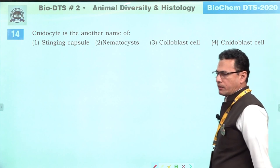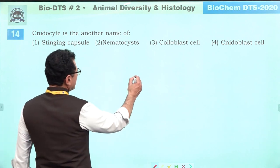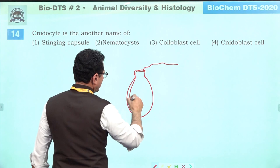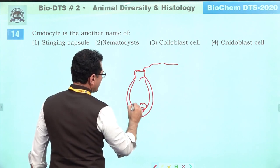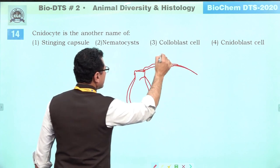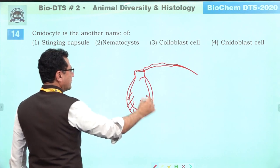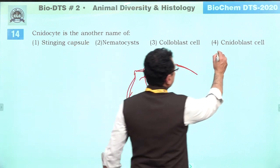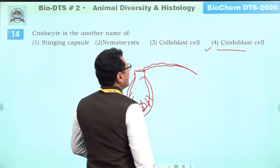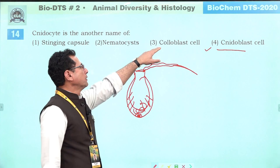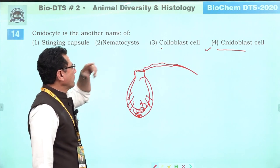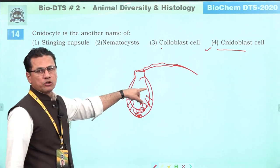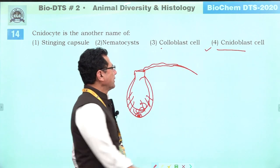Nematocyte is another name for cnidoblast cell. This is a confusing question for students. The cell shown in NCRT diagrams is the cnidoblast cell (also called nematocyte), which contains a stinging capsule inside. Cnidoblast cells are found in cnidarians, while colloblast cells are found in phylum Ctenophora. Inside the nematocyte is the stinging capsule. So the right answer is cnidoblast cells.